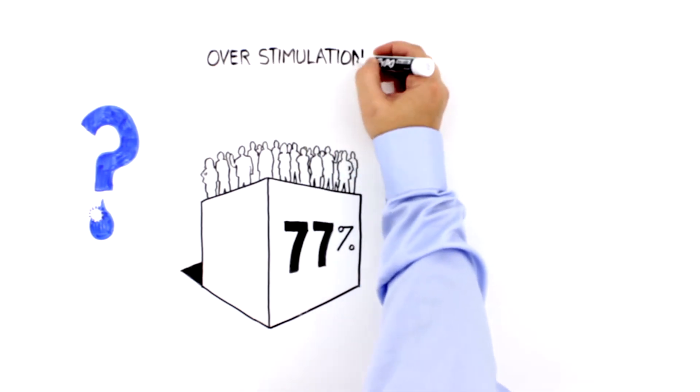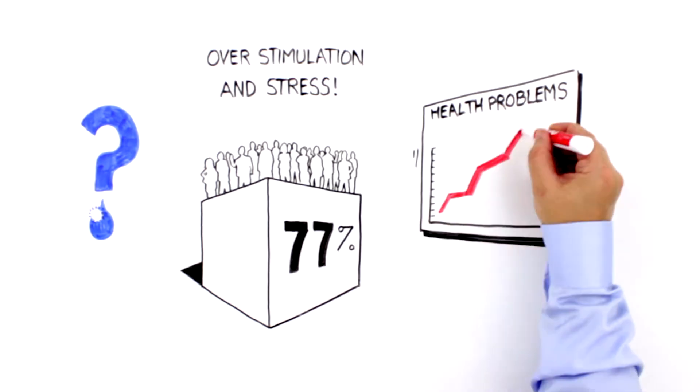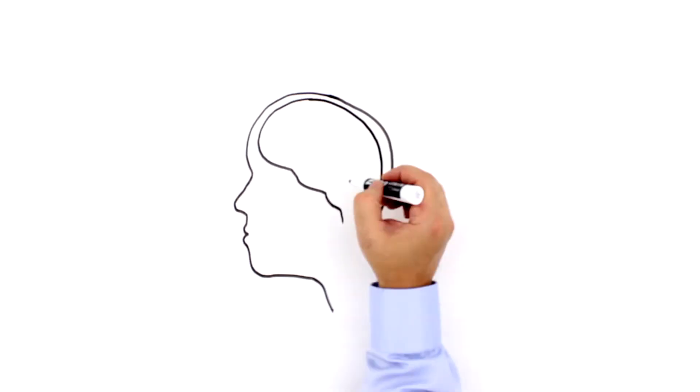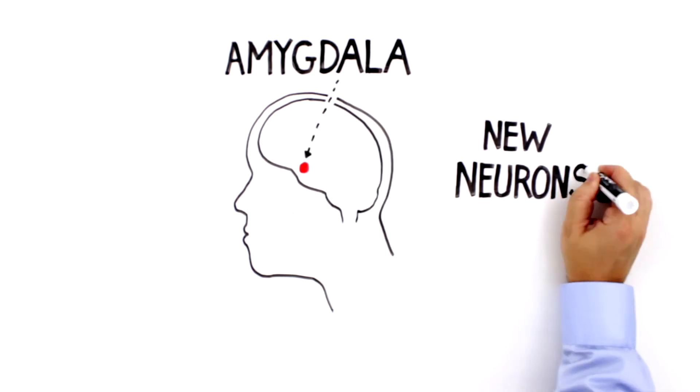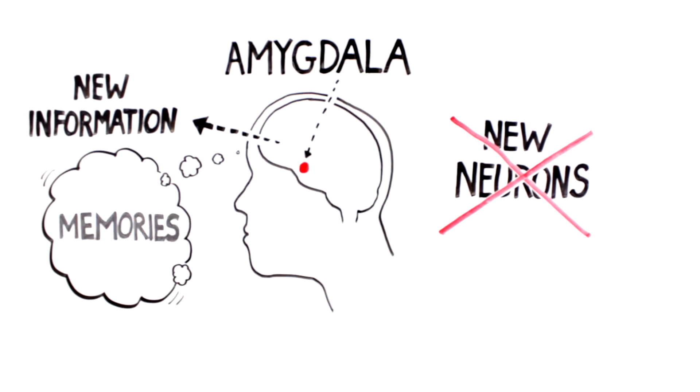Our lives are a tangle of overstimulation and stress, exacerbating health problems and overtaxing our brains. Chronic stress overstimulates the amygdala, preventing it from growing new neurons and can affect our ability to retain new information or create memories.